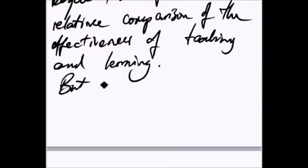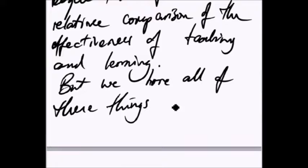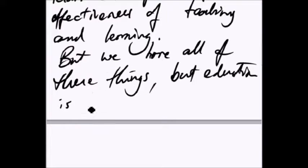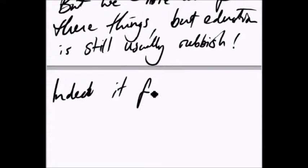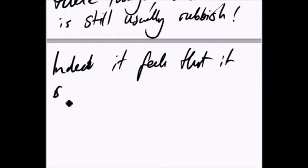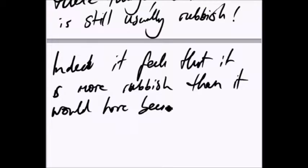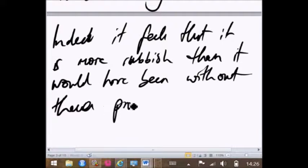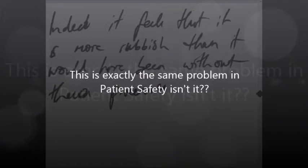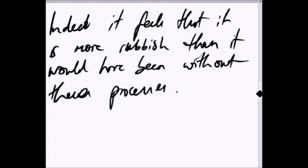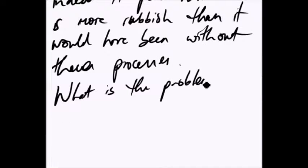So something's beginning to shape up here. But we have here all these things, but education is still usually rubbish. Okay, so that may be a feel for this problem because we're doing all of these things. We're doing all of this quality measurement and measuring this, measuring that, but it's still not very good. Why not? Would it, it feels, is it more rubbish than it would have been without these processes? That's the question. What's the problem?